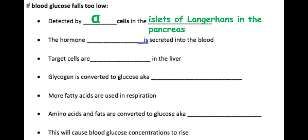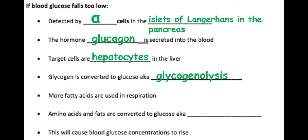This causes the hormone glucagon to be secreted into the blood, which carries it all over the body. It binds to target cells on the hepatocytes within the liver, causing the glycogen stored there to be converted back into glucose through glycogenolysis — a hydrolysis of glycogen back into glucose monomers.